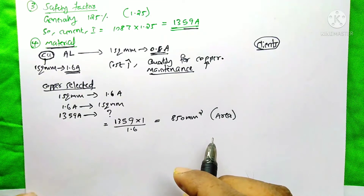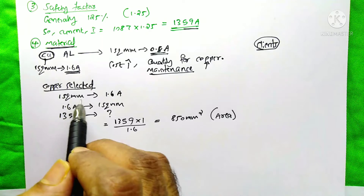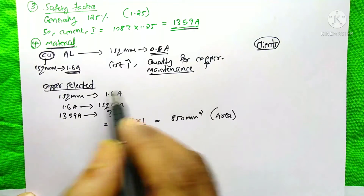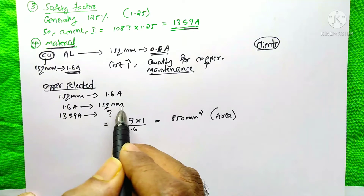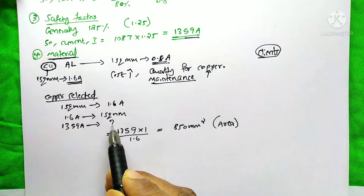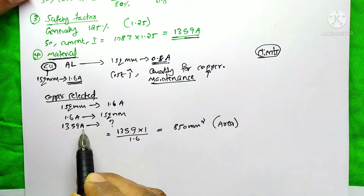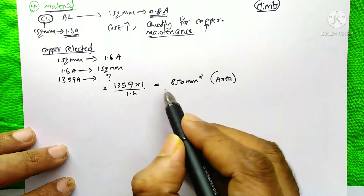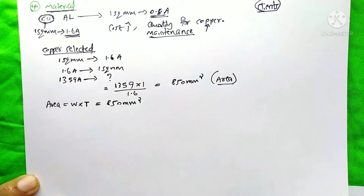We should convince our client to use copper rather than aluminum. In our example I selected copper. Since 1 mm² of copper carries 1.6 amps, we reverse it: to carry 1359 amps, we need 1359 × (1/1.6) = 850 mm² — that is the required cross-sectional area.